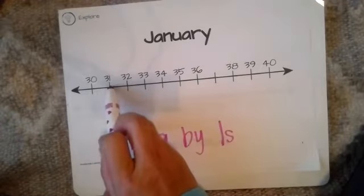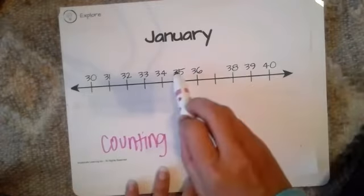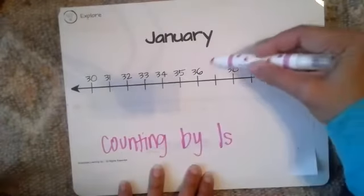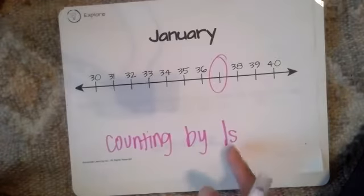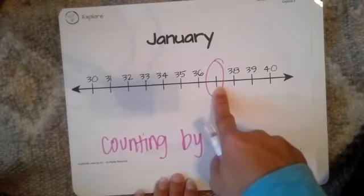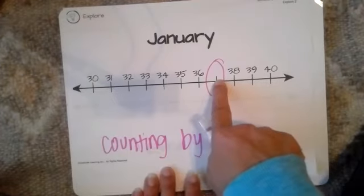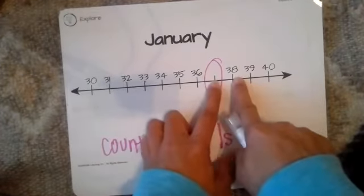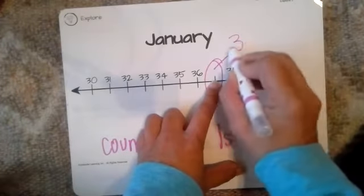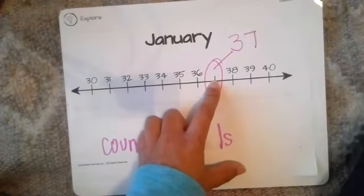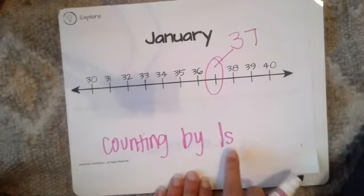So 30, 31, 32, 33, 34, 35, 36. But wait, we have a missing number. What do we know when we're counting by ones? How can we fill that number in? 36, something, 38 — what number should go in the middle? Yeah, 37. That number should be 37 because it follows a pattern of counting by ones.